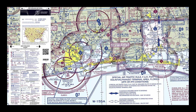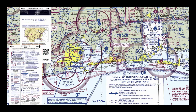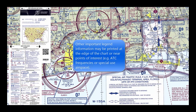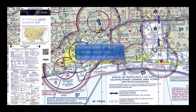This figure is an excerpt from the legend of a sectional chart. By referring to the chart legend, a pilot can interpret most of the information on the chart. A pilot should also check the chart for other legend information, which includes air traffic control frequencies and information on airspace. These charts are revised semi-annually, except for some areas outside the conterminous United States, where they are revised annually.